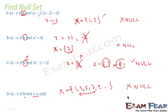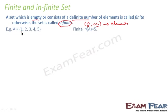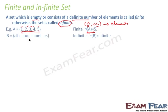Now let's talk about finite and infinite sets. A finite set is a set which has either 0 or n (a definite number) of elements. If a set has 0 or n elements, it is a finite set; otherwise it is infinite. For example, set A = {1, 2, 3, 4, 5} has 5 elements — it is finite. Set B = {all natural numbers} = {1, 2, 3, 4, 5, 6, ...} goes to infinity — so B is an infinite set.